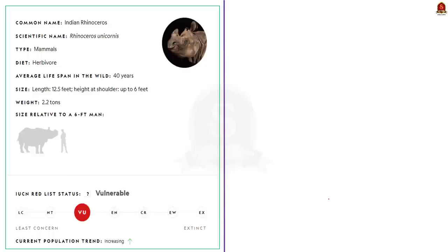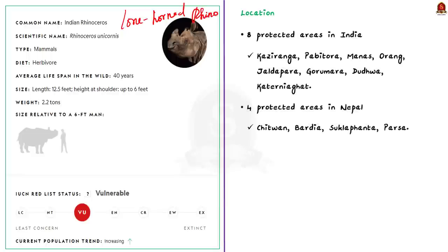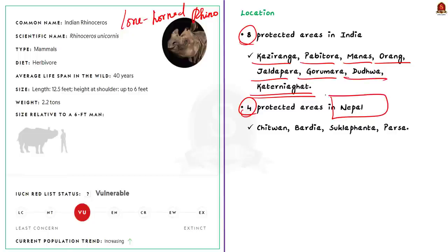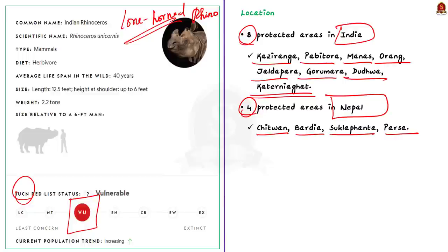The one-horned rhinoceros, otherwise called the Indian rhino, is found in eight locations in India: Kaziranga, Pabitora, Manas, Orang, Jaldapara, Gorumara, Dudhwa, Katarniaghat, and others. It is also found in four protected areas in Nepal: Chitwan, Bardia, Shuklaphanta, and Parsa. The IUCN status of the one-horned rhino is vulnerable. These facts about all three species are very relevant for your preliminary examination, so keep them in mind.